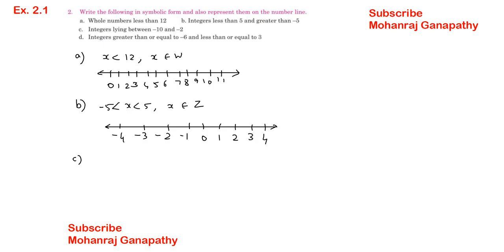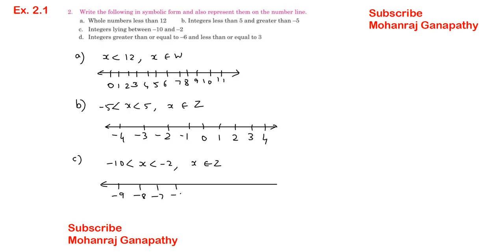Part C: integers lying between minus 10 and minus 2. Between minus 10 and minus 2, x is an integer. On the number line: minus 9, minus 8, minus 7, minus 6, minus 5, minus 4, minus 3.